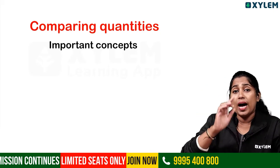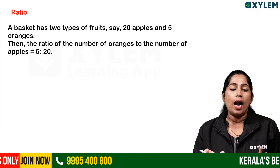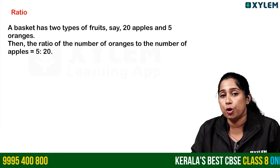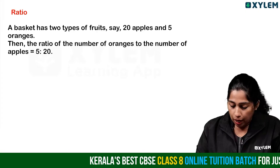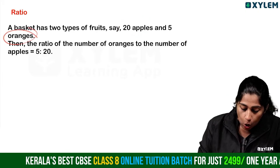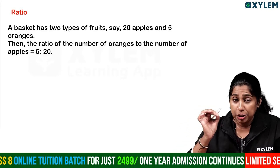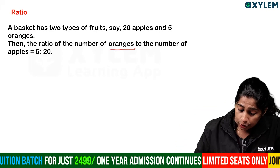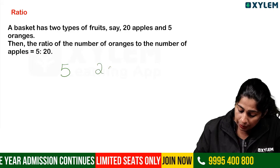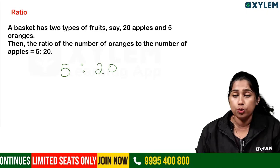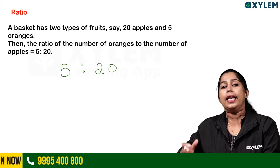Now, let's think about two quantities. For example, my bag has 20 apples and 5 oranges. The ratio of oranges to apples is 5 to 20.